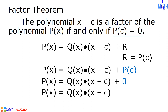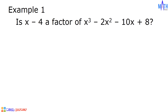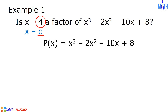Let us discuss some examples. Example number one: is x minus 4 a factor of x cubed minus 2x squared minus 10x plus 8? In this example, x minus 4 is of the form x minus c where c is equal to 4. Let p of x equal x cubed minus 2x squared minus 10x plus 8.